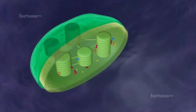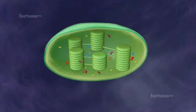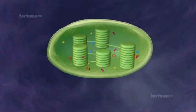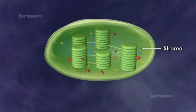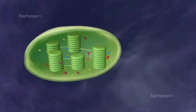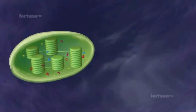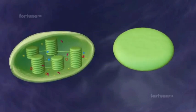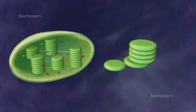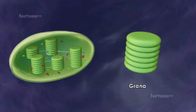Inside the inner membrane is a matrix of enzymes and water known as the stroma. Inside the stroma there are membranes folded into discs called thylakoids, which are arranged in stacks called grana.